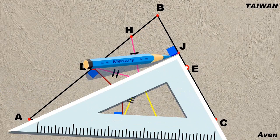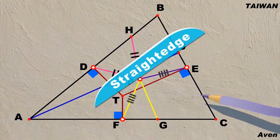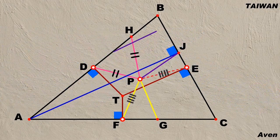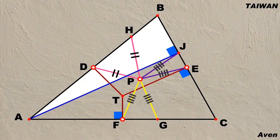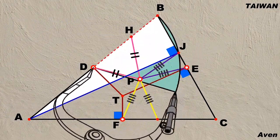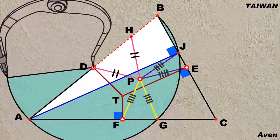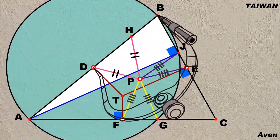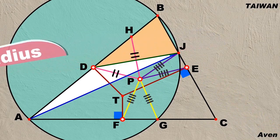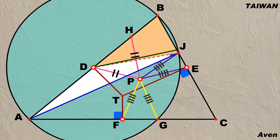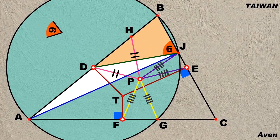After ignoring the unnecessary parts, construct the altitude AJ and PJ segment. We can clearly see the length of the two violet segments and the two yellow segments are equal. Here we can see a white right triangle again. Since the midpoint of the hypotenuse of a right triangle is also the center of its circumcircle, after constructing DJ segment, we can clearly see an orange isosceles triangle DBJ. Therefore, the red angle 6 is equal to another red angle 6.